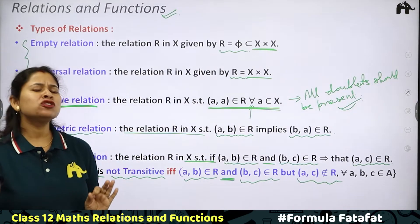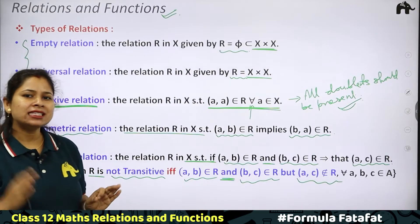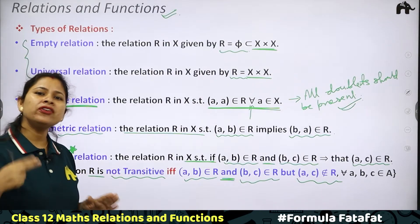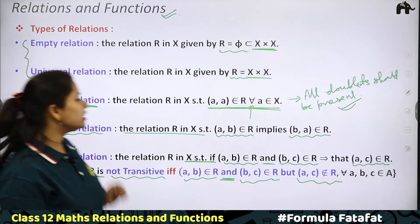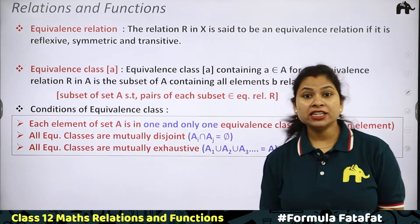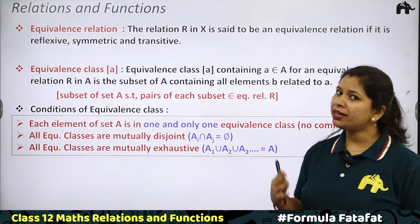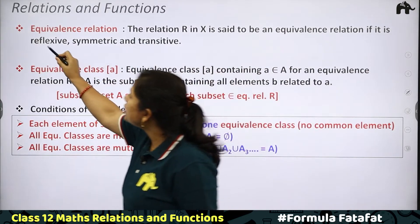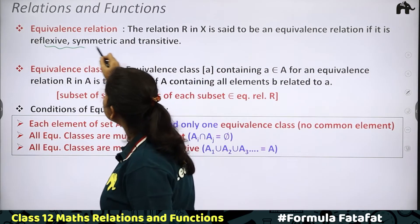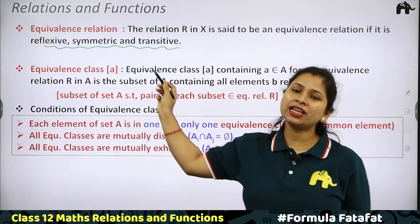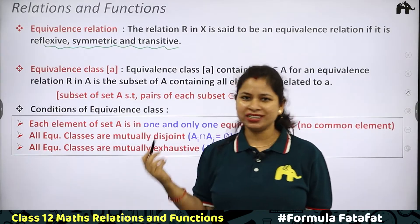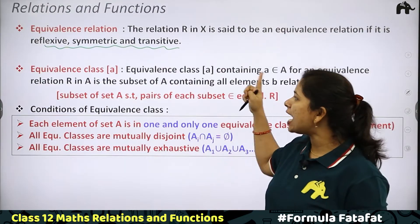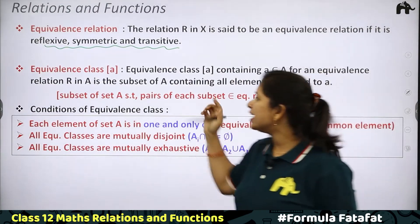There are many questions you have already done in NCERT on this. Now let's look at Equivalence Relation. You have now studied reflexive, symmetric, and transitive. If a relation shows all three properties simultaneously, we call it an equivalence relation. There are many questions on this, so we have to focus carefully.